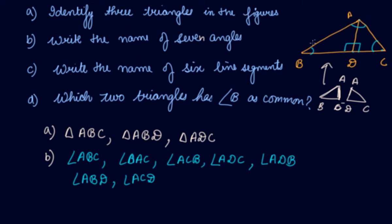These are the two other triangles. We have found out triangle ABD is the other triangle in this figure. Triangle ADC and triangle ACD. So we have written all seven angles in this figure.